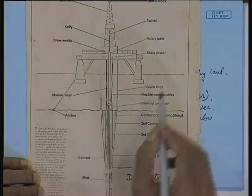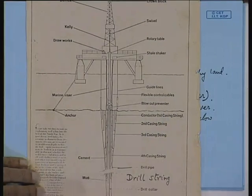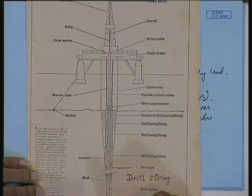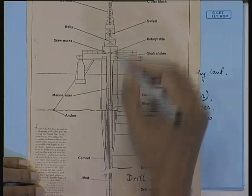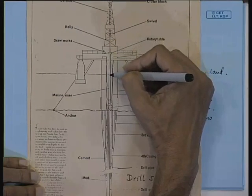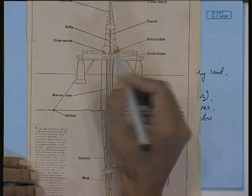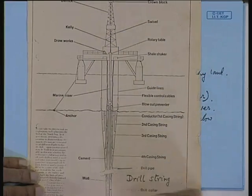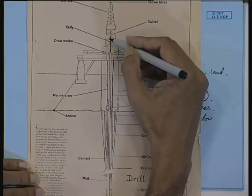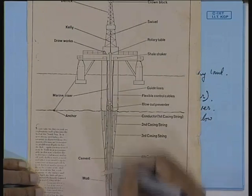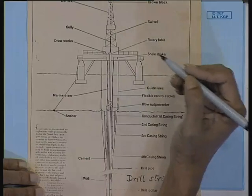To drill a hole, you need to apply two forces — a vertical force and a torque, just like driving a screw into a wall. To drill a borehole you have to put vertical pressure on the drill string, otherwise it won't go down, and also apply rotary torque. This vertical pressure on the drill bit is actually the weight of the drill string, which can weigh a few hundred tons.